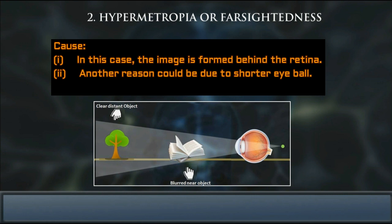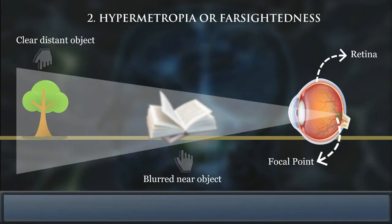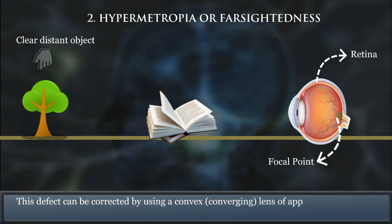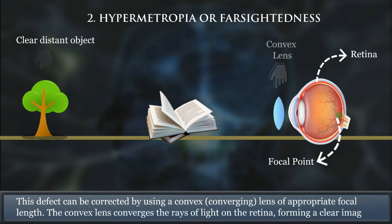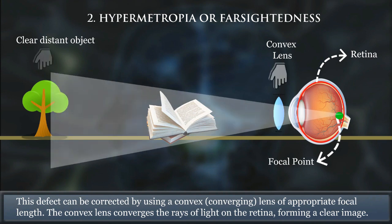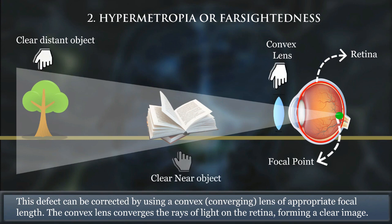The cause in this case is that the image is formed behind the retina. Another reason could be due to shorter eyeballs. This defect can be corrected by using a convex or converging lens of appropriate focal length. The convex lens converges the rays of light onto the retina, forming a clear image.